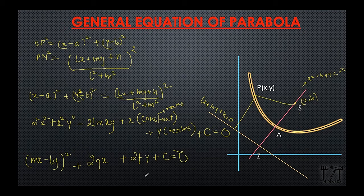And as we have seen the definition of general conic section as ax squared plus 2hxy plus by squared plus 2gx plus 2fy plus c is equal to 0. Similarly we have the general equation of parabola as mx minus ly whole square plus 2gx plus 2fy plus c is equal to 0 where m and l are the coefficients which we get from the equation of the directrix.